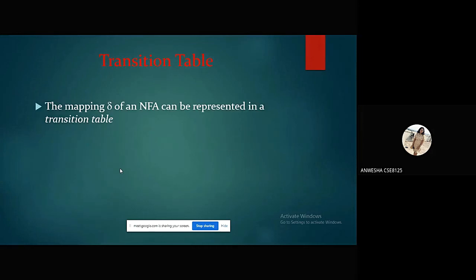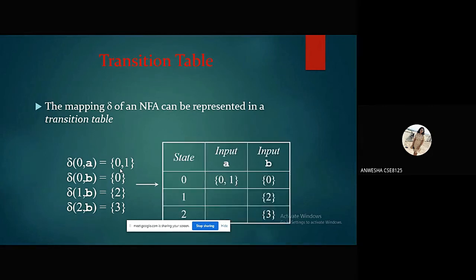Then this is a transition table. The mapping of an NFA can be represented in a transition table. For example, the previous transition graph has been given here as the transition table. That is for state 0, input A, we have 0, 1, and input B, we have 0. For state 2, as input A, we have nothing because we didn't have any input A in state 2, but for input B, we are getting 3.